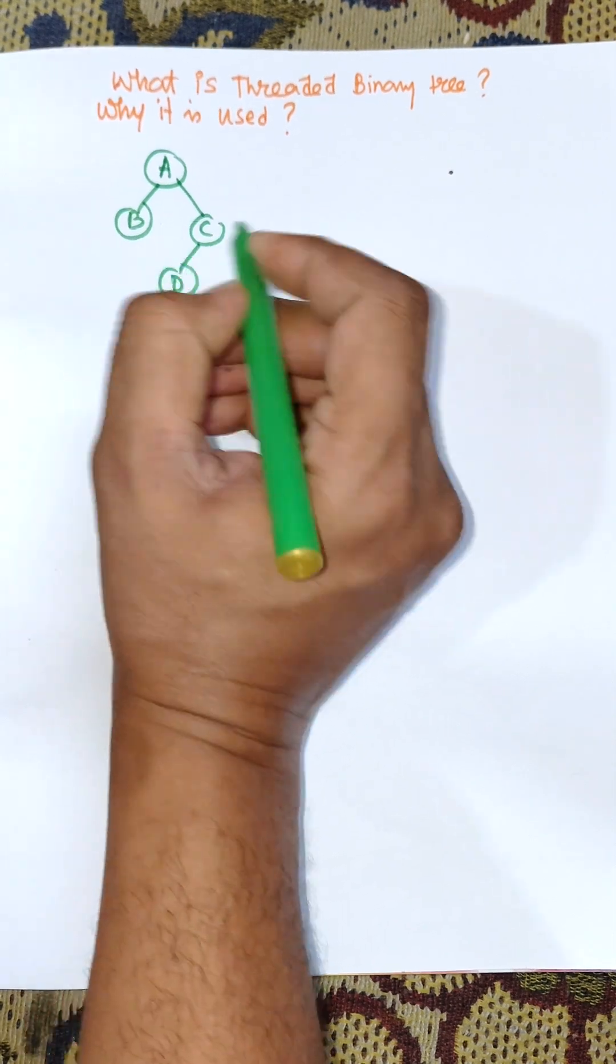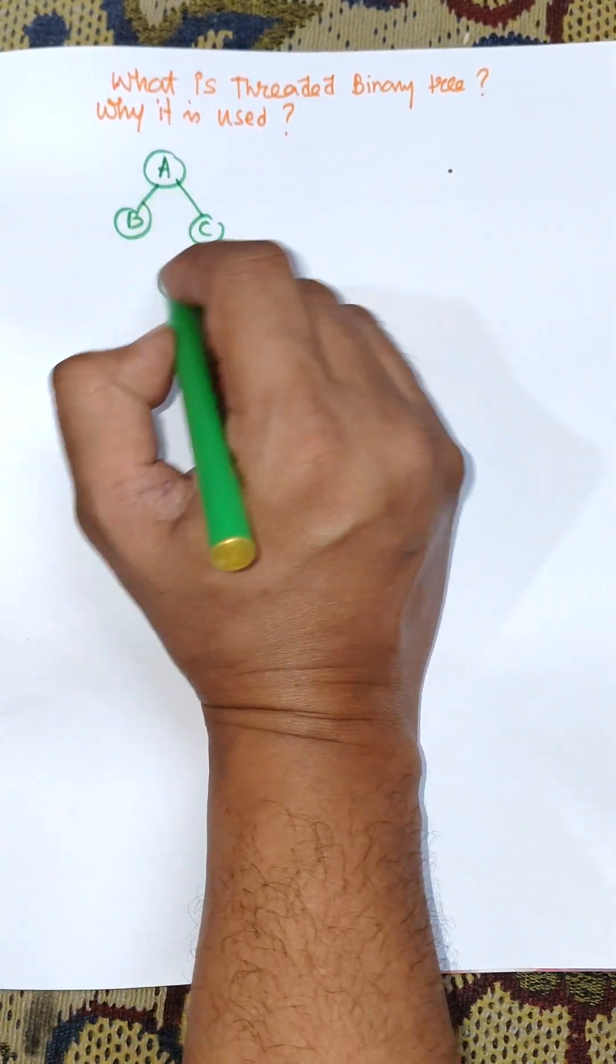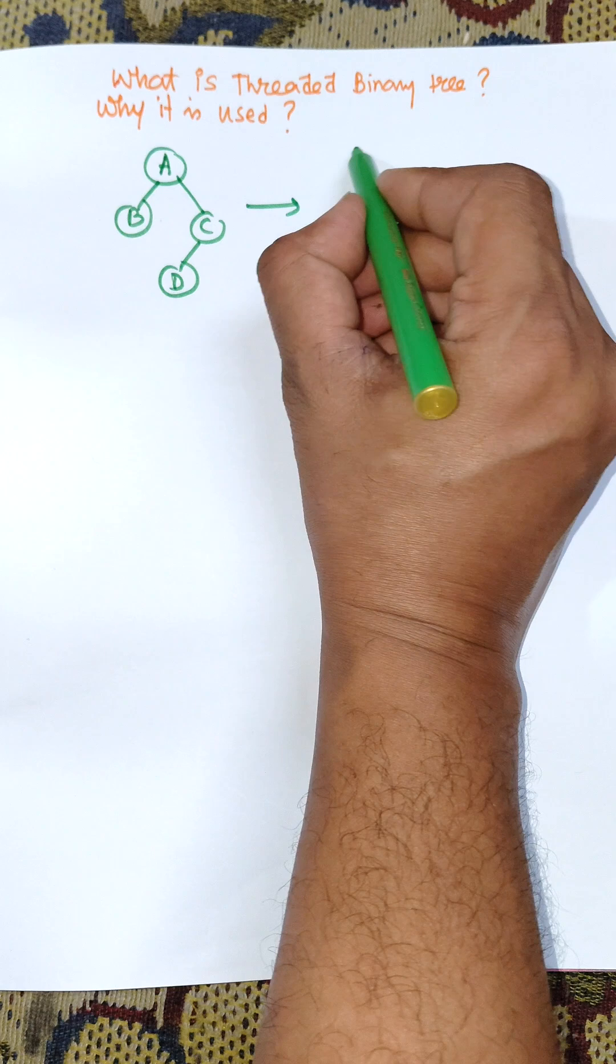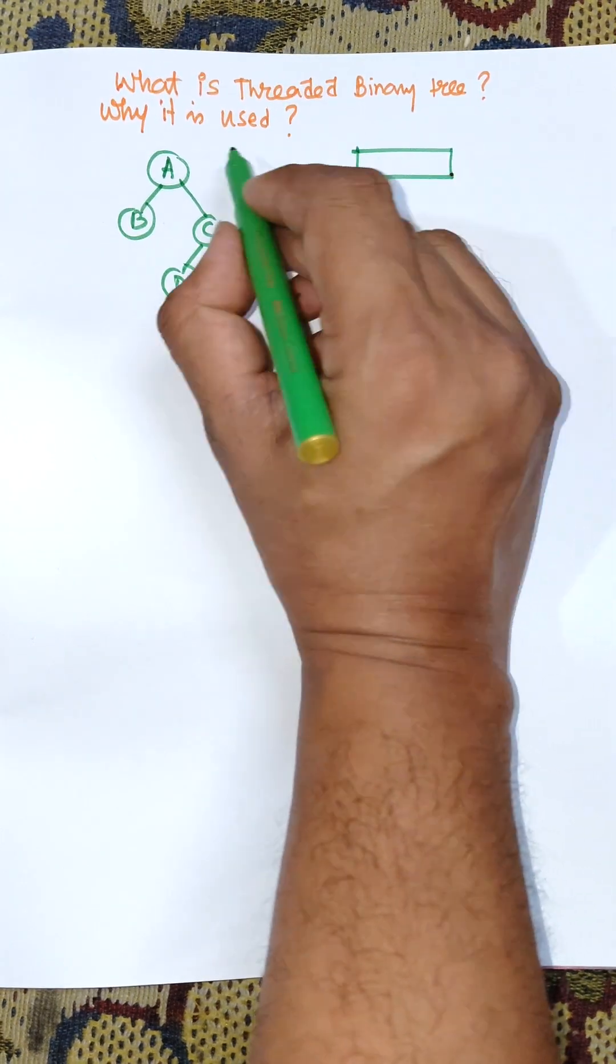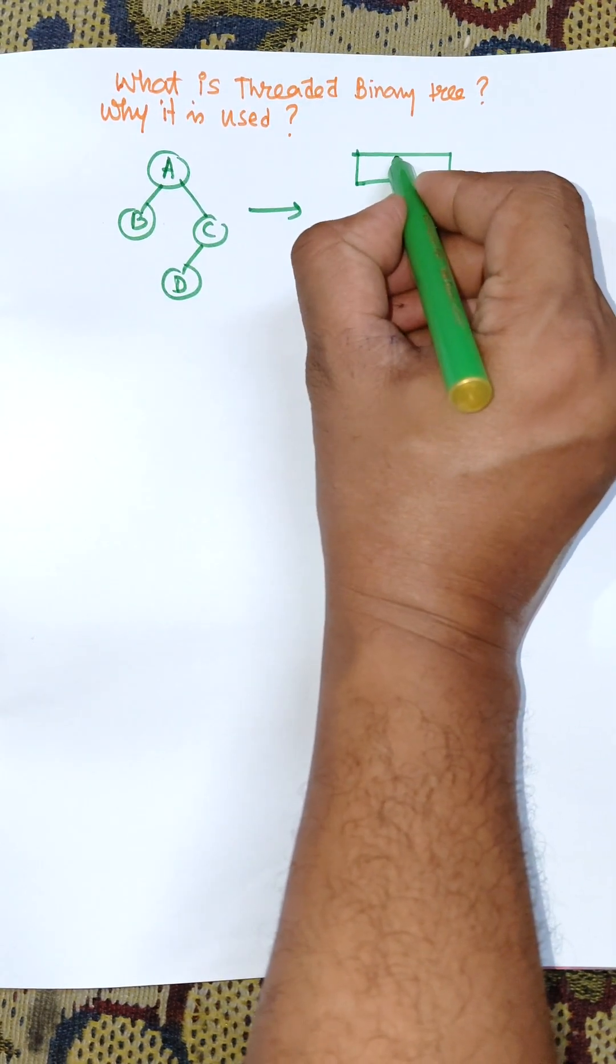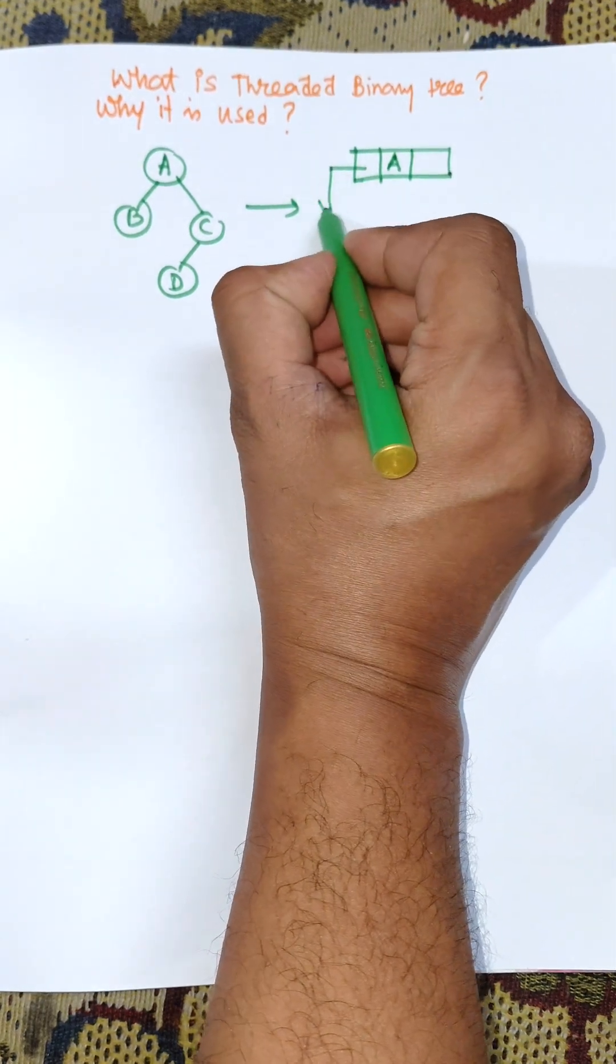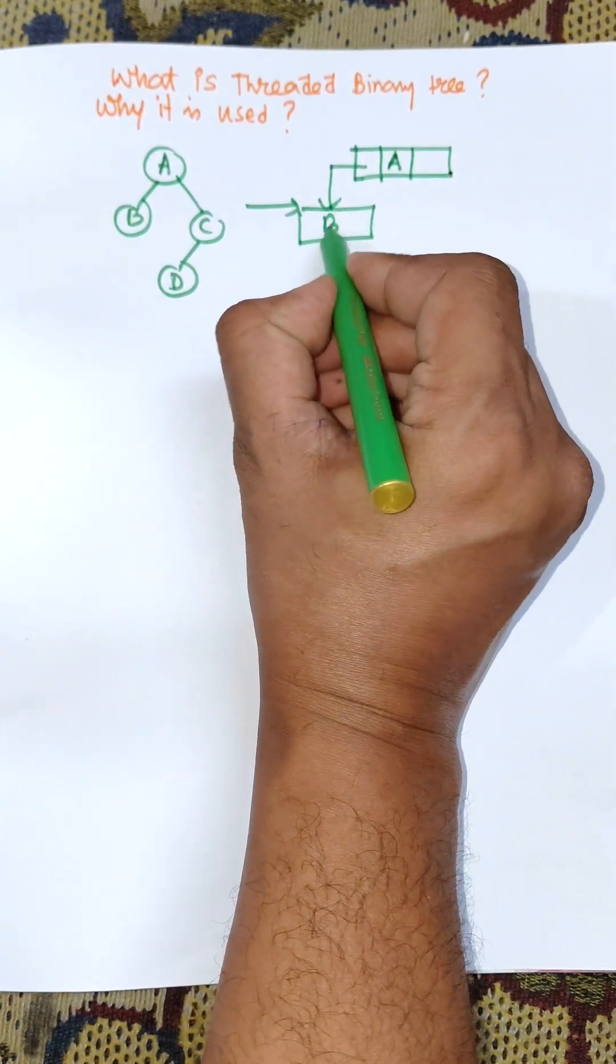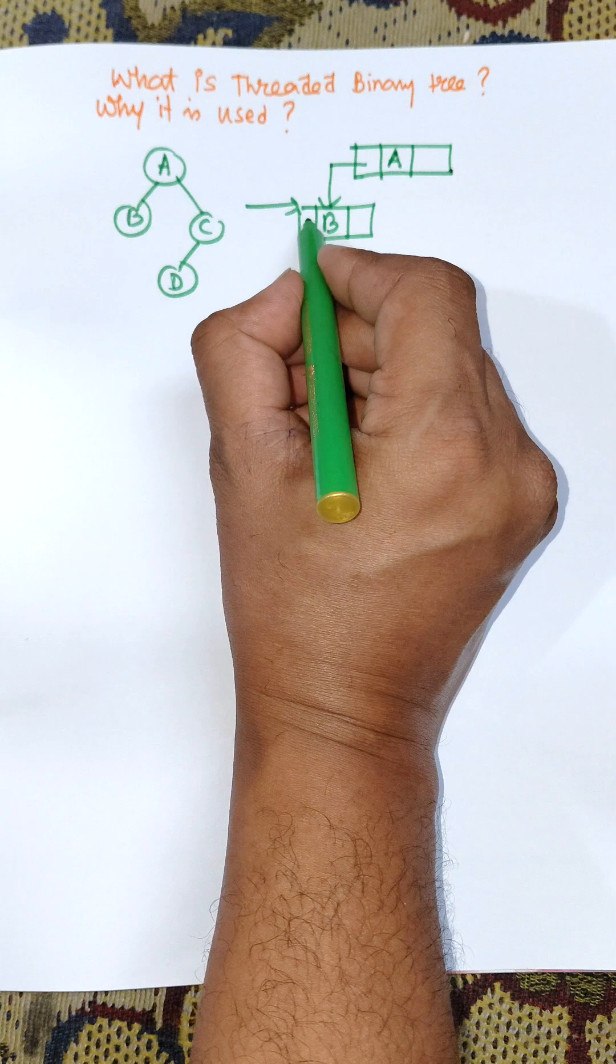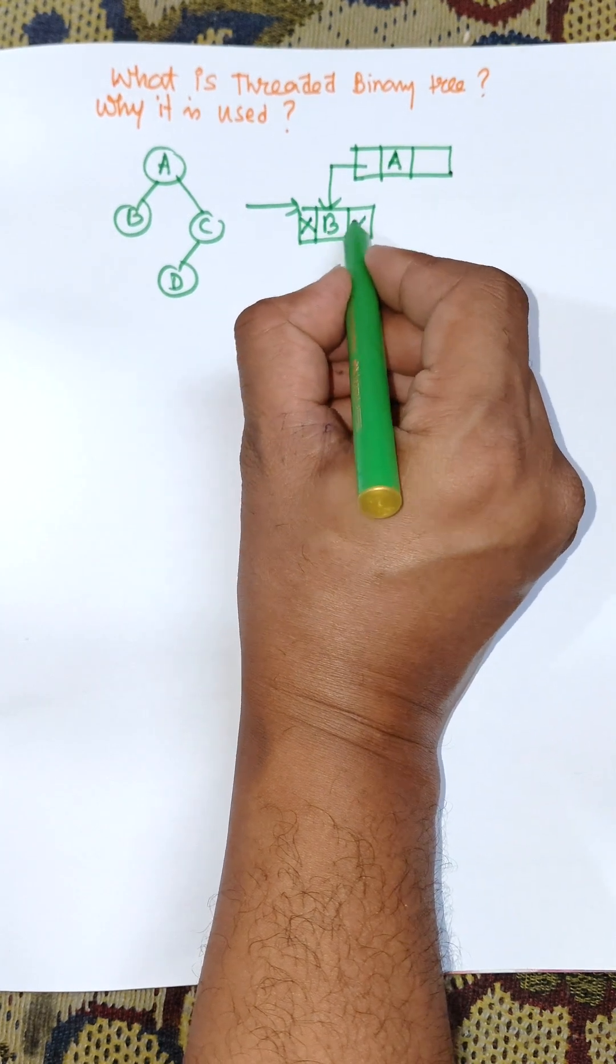When you represent this binary tree using linked list, then we need to create a node for every value. This is A and there is a left link and right link. Left pointer points to the node B. There is no child of B, so left pointer is null and right pointer is null.